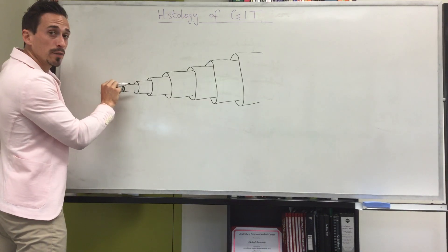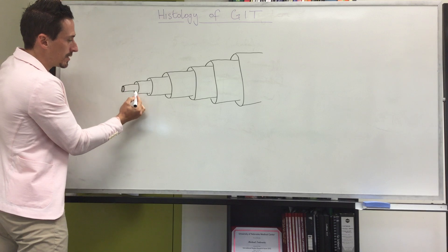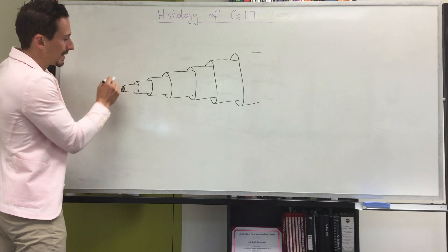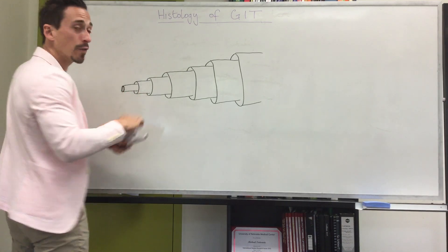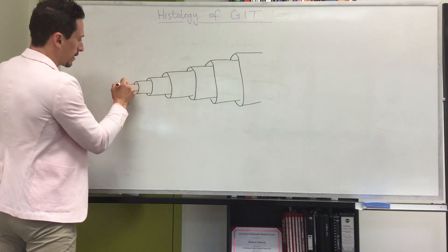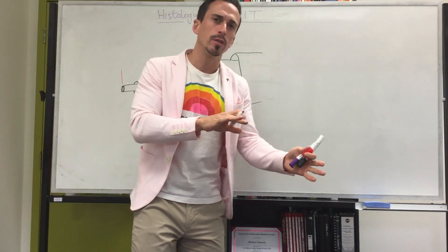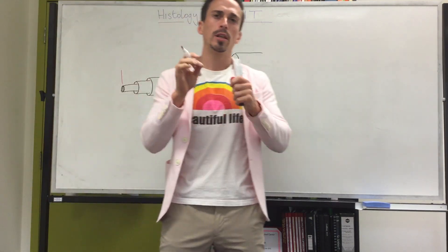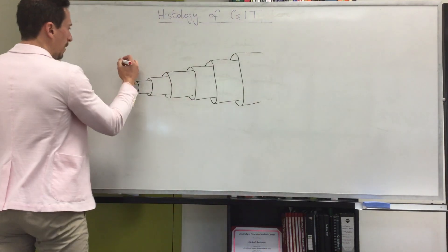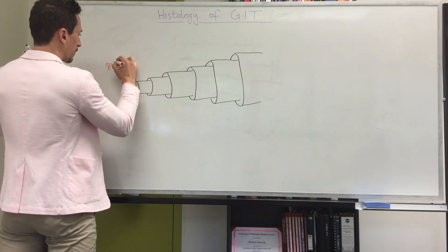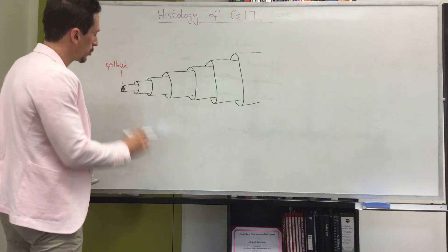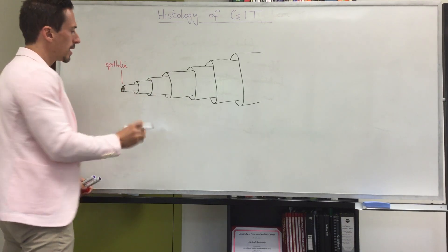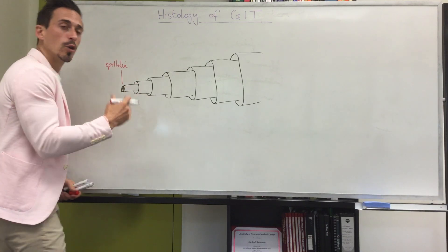This is the tube that all the foodstuffs move through — the most interior aspect. Going back to first principles: what is the tissue type that lines the outside of the inside of our body? It's epithelia. So we have epithelial tissue lining the inside of the alimentary canal.